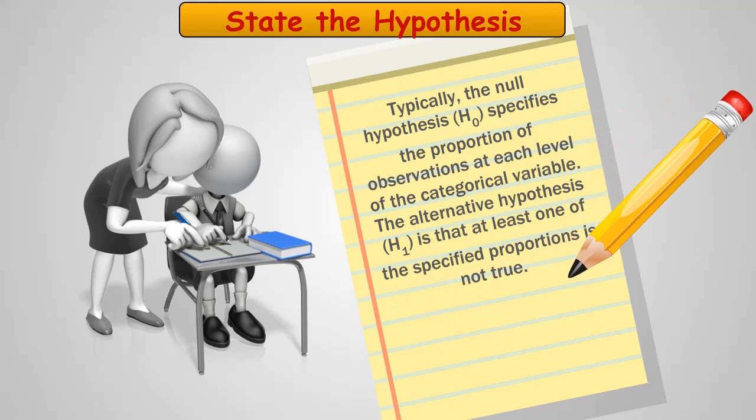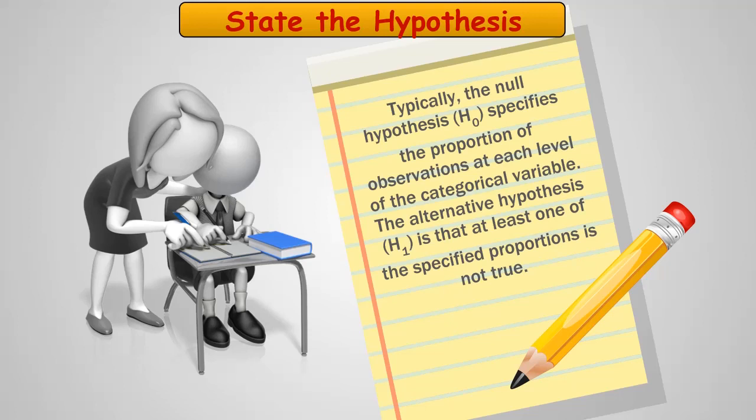You may, in fact, see that the null hypothesis can be specified as the portion of observations at each level of the categorical variable. In my example, the number of rookies is equal to the number of rookies and the number of all-stars is equal to the number of all-stars. The alternate hypothesis would be that at least one of those is not true.